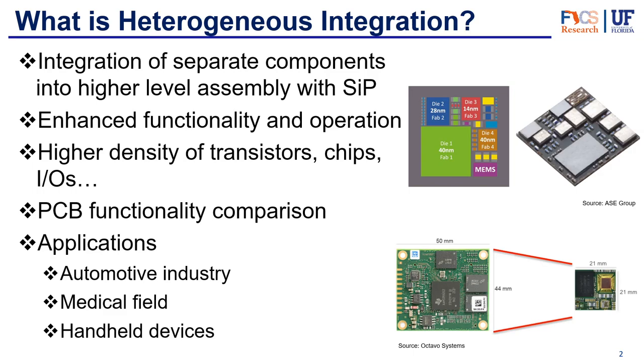What this brings you is enhanced functionality and operation and also a higher density of transistors, chips, or IOs. The chips are placed much closer together, so you get a higher density of chips and you're also able to stack them vertically in a 3D architecture. That gives you a much higher density in terms of footprint for both transistors, chips, and also the IOs, which is what we'll focus on later.